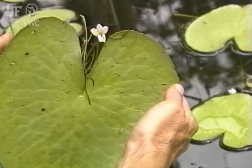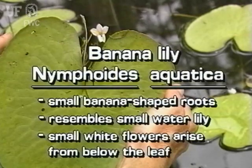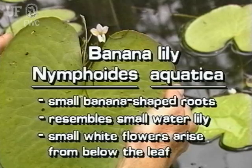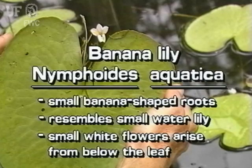The banana lily has small banana-shaped roots. The plant resembles a small water lily. Small white flowers arise from below the leaf.